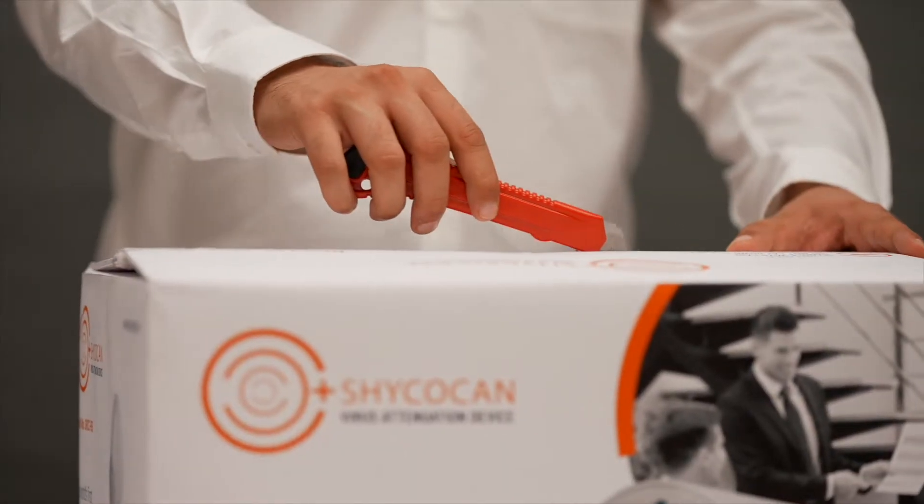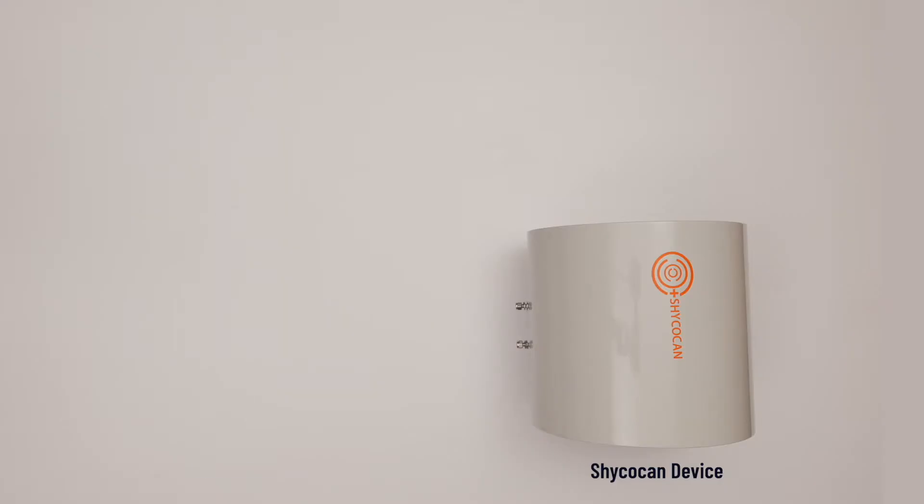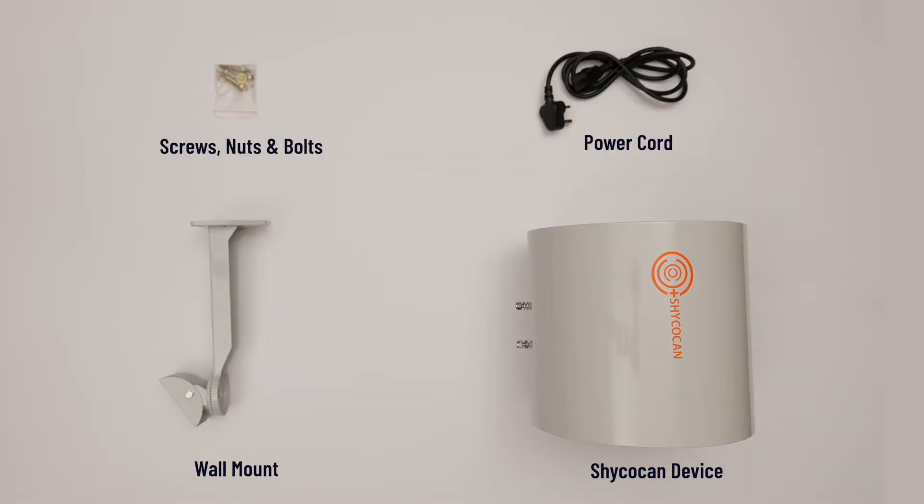Unbox it and pull out the device itself, a wall mounting bracket, the power cord, along with screws, nuts, and bolts.